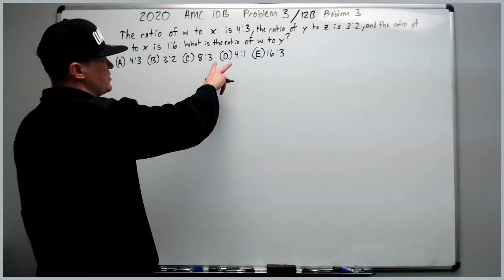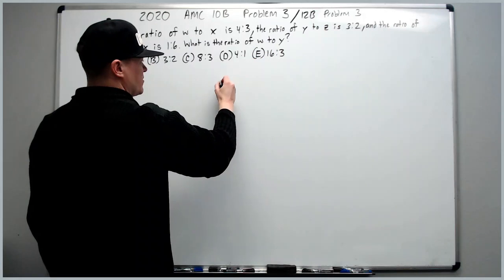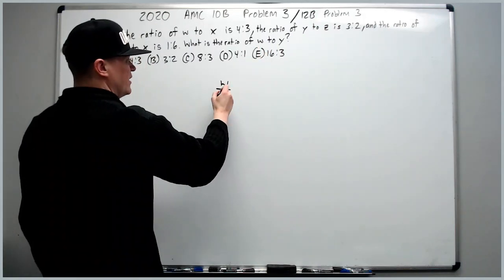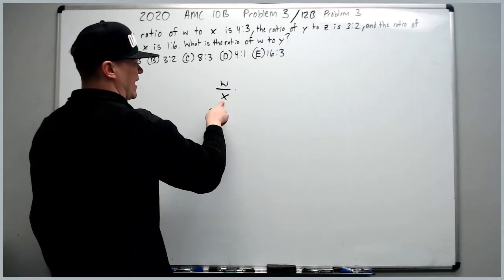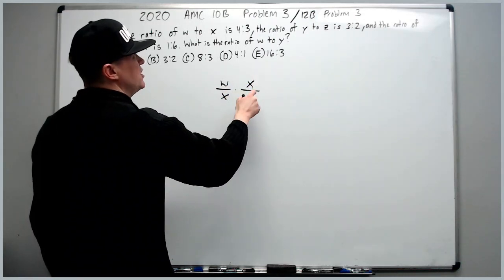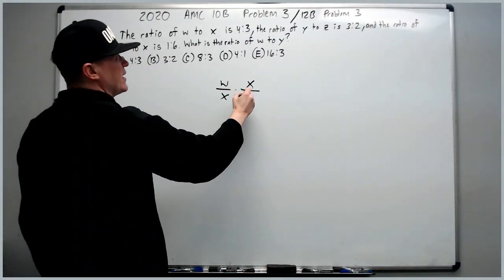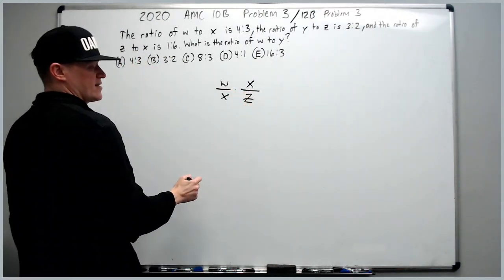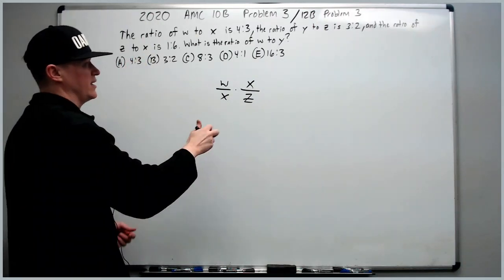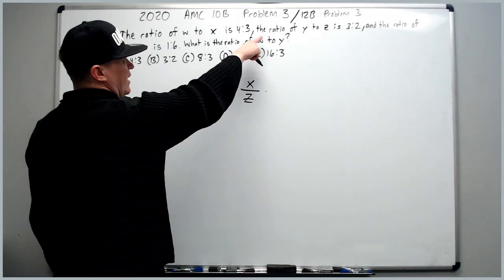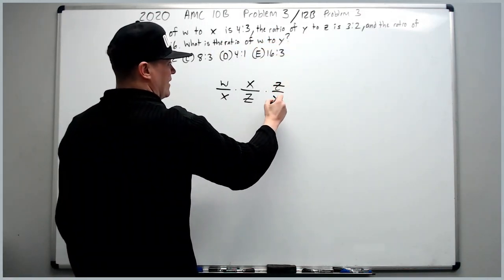All we're going to do is think about w to x. I want w to y, which means I want w in the numerator. Let's put w here and x here in the denominator. Now, I want the x to go away, so let's put it in the numerator and I've got another ratio here of x and z. I can put z here like this because I know z to x or x to z is an option. Either one, I just reverse the direction. And then I can put y to z. I can make it z to y.